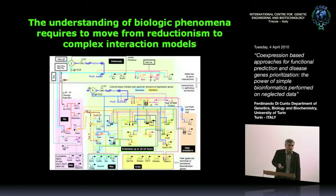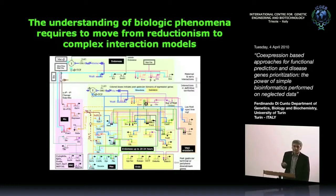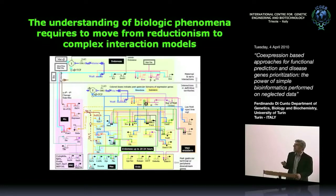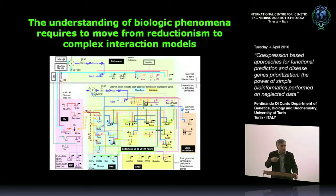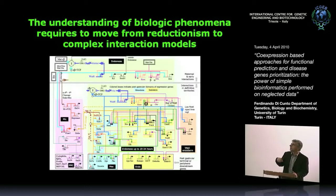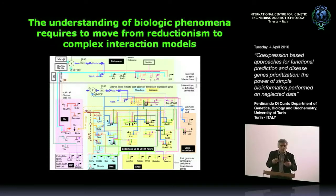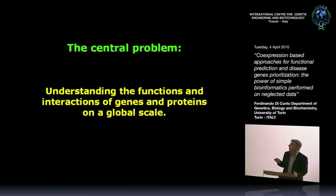We are in the post-genomic era, and what people would like to do is obtain high-level models of biological phenomena — the so-called systems biology. The classical approach of molecular biology, although very successful, is not sufficient to gather a real understanding of what's going on in cells and in organisms.